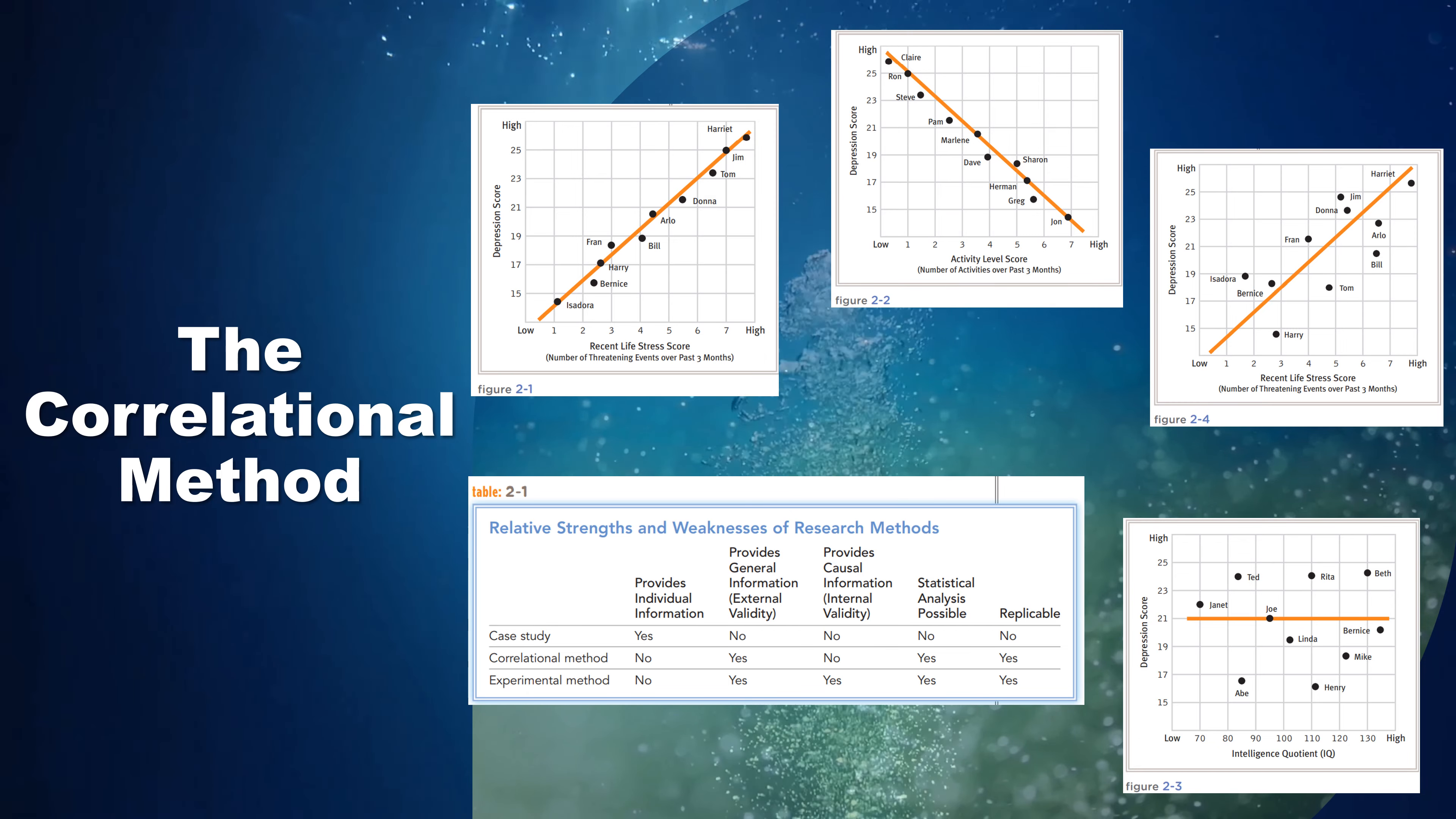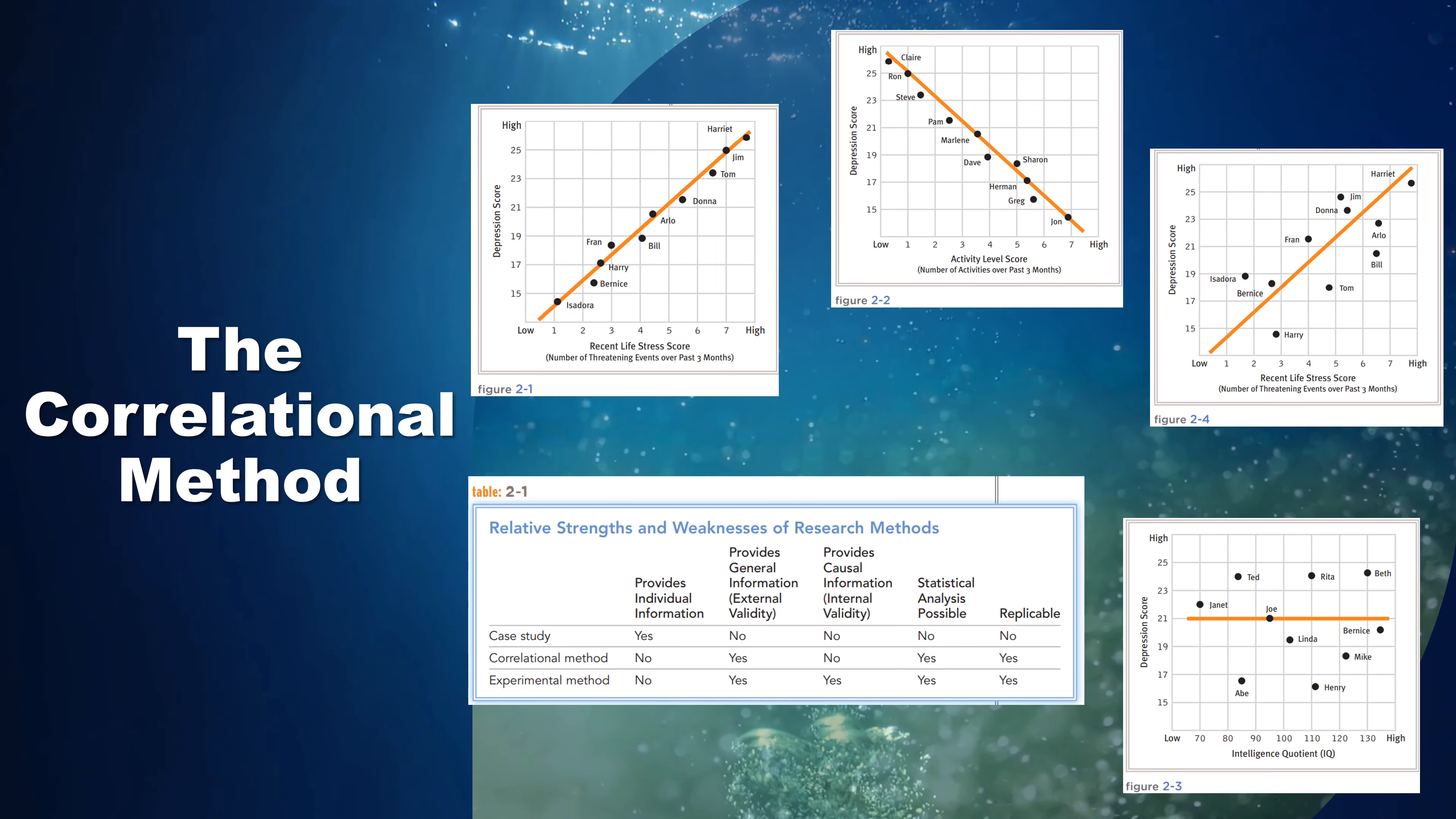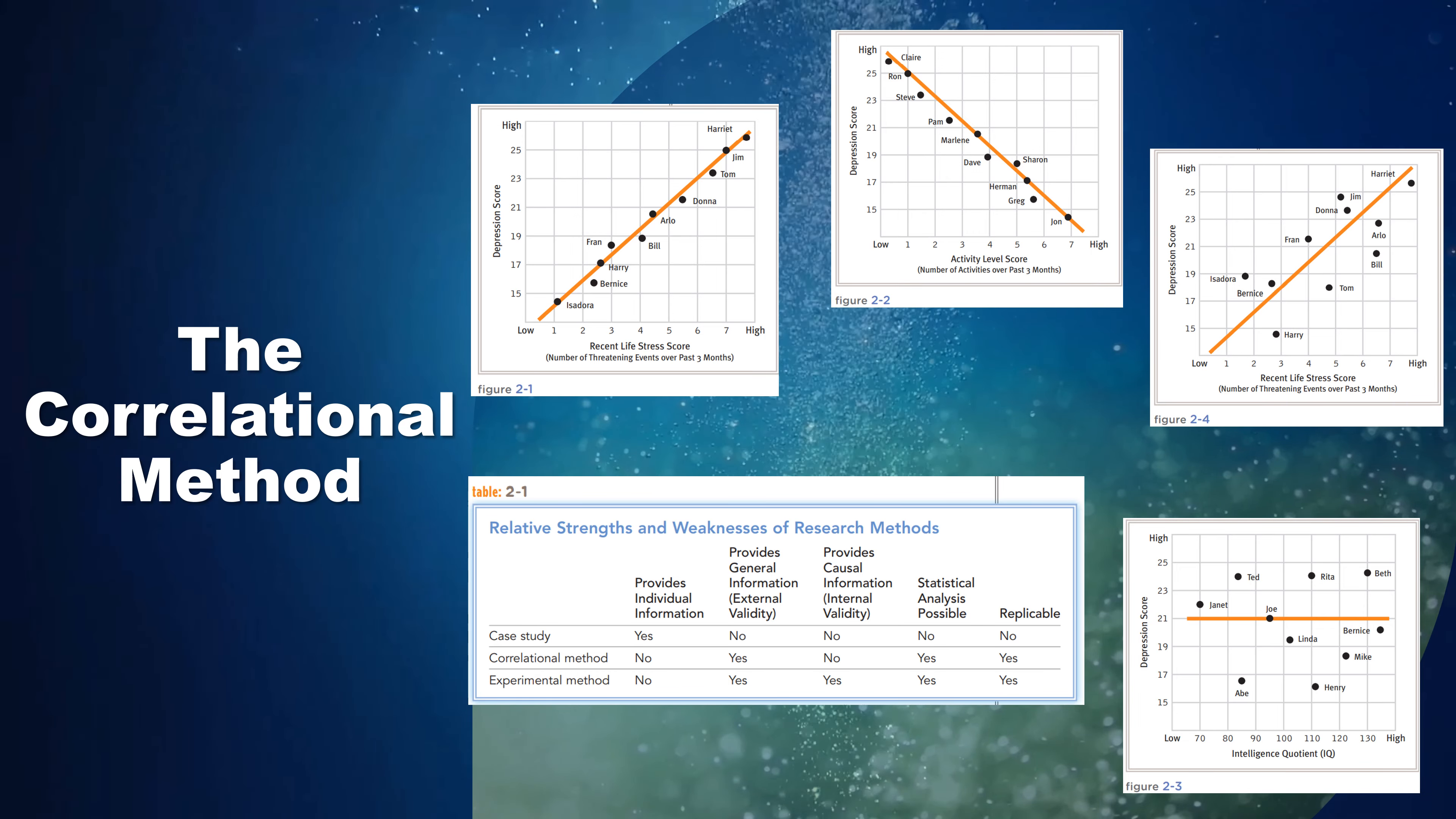The correlation coefficient can vary from +1.00, which indicates a perfect positive correlation between two variables, down to -1.00, which represents a perfect negative correlation. The sign of the coefficient (+ or -) signifies the direction of the correlation; the number represents its magnitude.